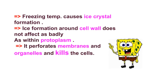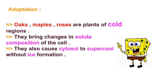At freezing temperatures, ice crystal formation occurs. Ice formation around the cell wall does not affect the cell as badly as within the protoplasm, because it perforates membranes and organelles and kills the cells. The adaptation is that plants of cold regions such as oaks, maples, and roses bring changes in the solute composition of the cell and cause cytosol to super-cool without ice formation.